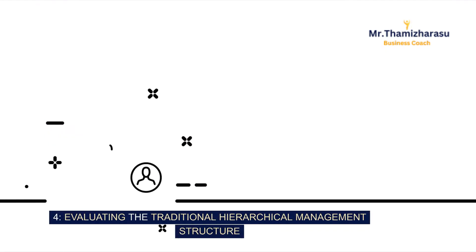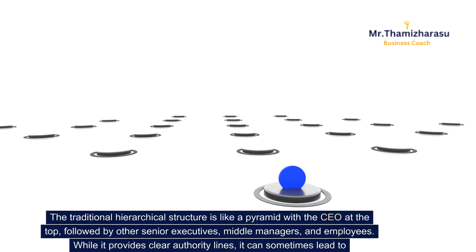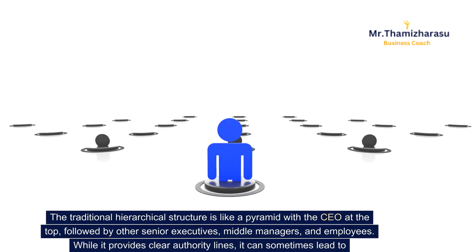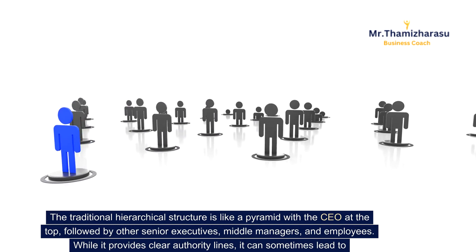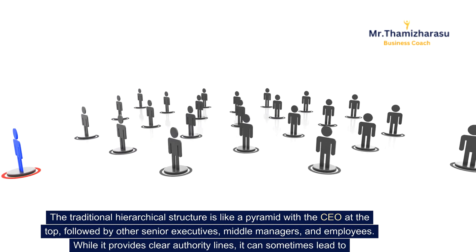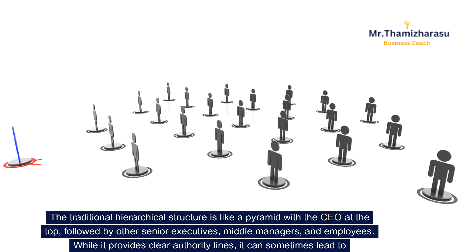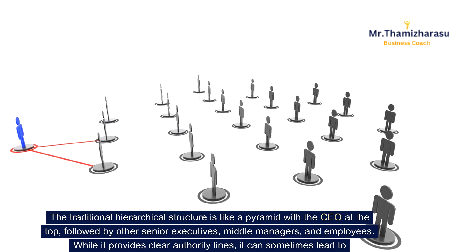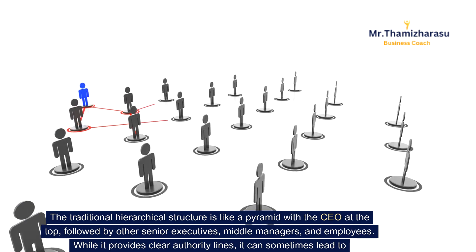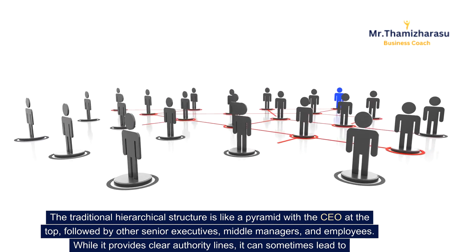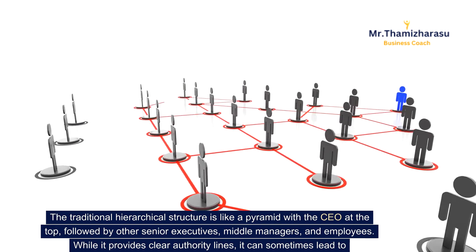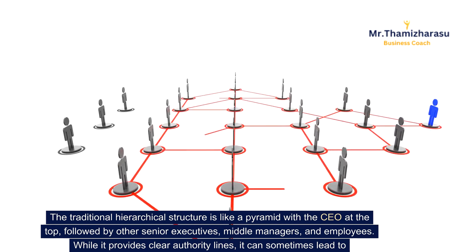Evaluating the traditional hierarchical management structure. The traditional hierarchical structure is like a pyramid with the CEO at the top, followed by other senior executives, middle managers, and employees. While it provides clear authority lines, it can sometimes lead to communication barriers and reduced flexibility.